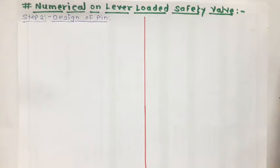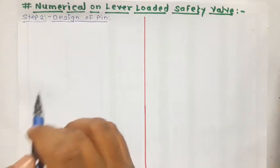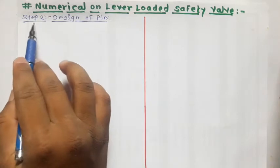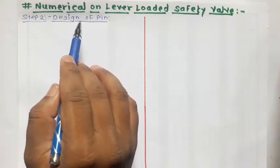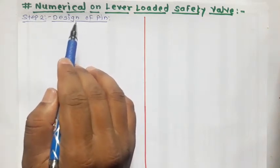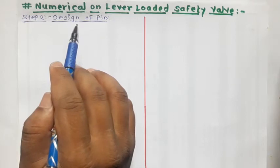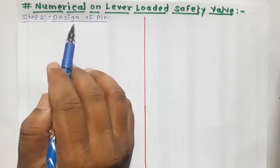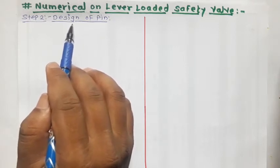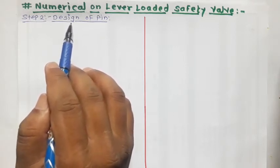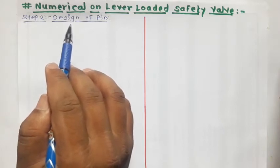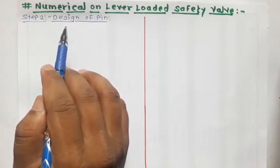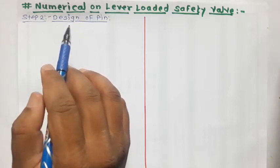After calculating unknown forces PWR and selecting the maximum force, we move to step number 2, that is design of pin. The pin is designed on the basis of three criteria: first, based on permissible crushing stress; second, based on permissible bearing pressure; and third, based on permissible shear stress. Now let us design the pin using each of these criteria.